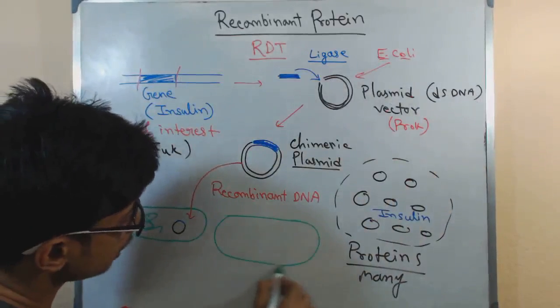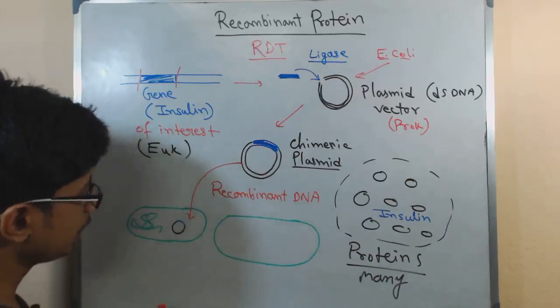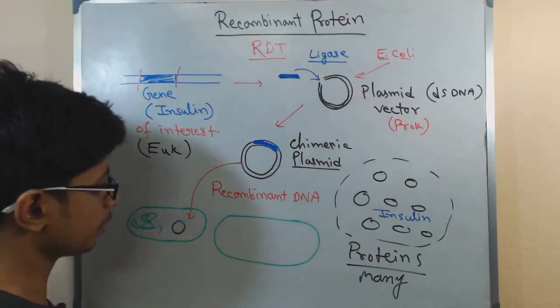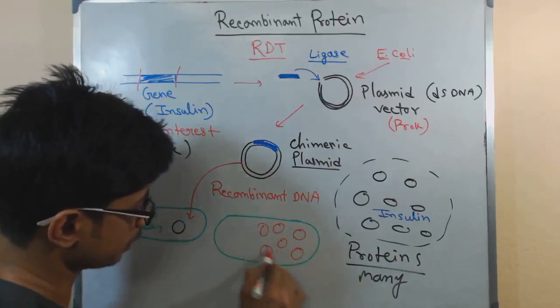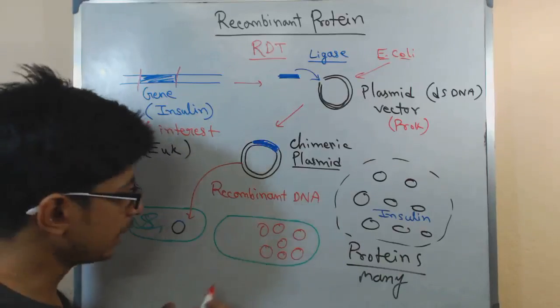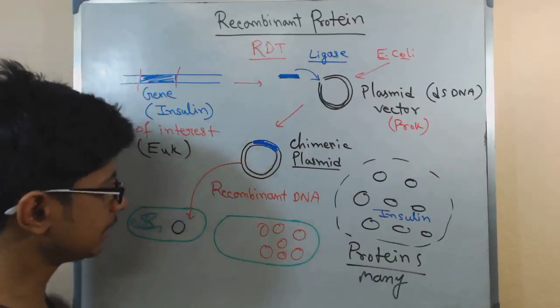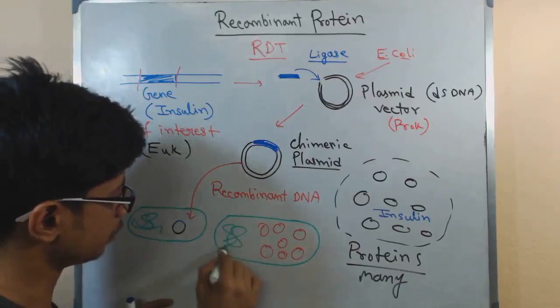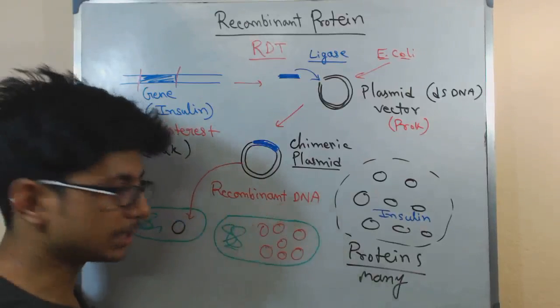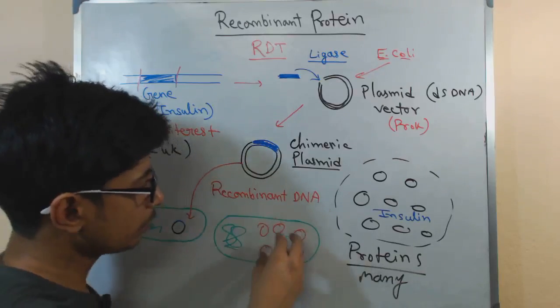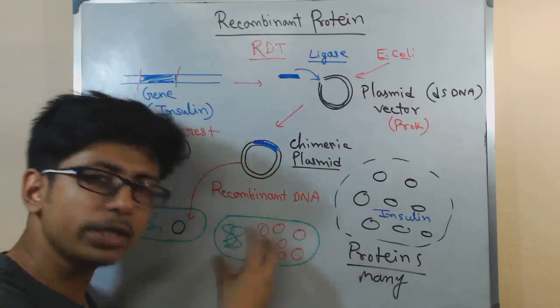After some time, what we can see is that inside the E. coli cell there will be multiple recombinant molecules. Let's say recombinant DNA, I'll draw it with red color here for simplicity. All of these are recombinant DNA molecules, and let's say this one is the genome. These are all the recombinant DNA molecules.